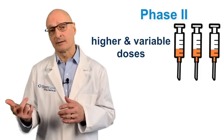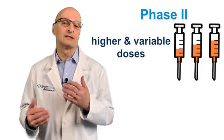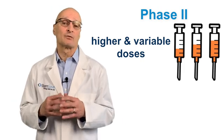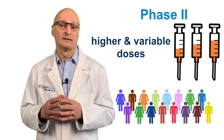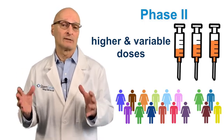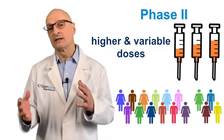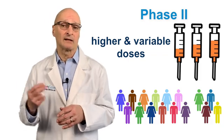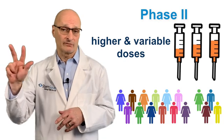In phase two investigators administer higher and variable doses to assess ideal dosage parameters and to measure efficacy. This typically involves 100 to 300 patients. A placebo group, that is a group of patients that have administered a harmless substance, may be included in this phase to gauge results. A successful phase two trial allows researchers to advance to phase three.